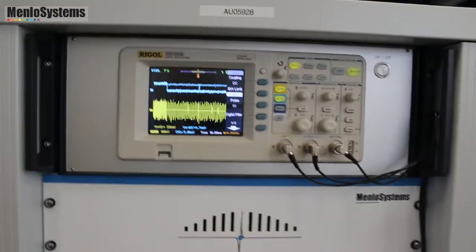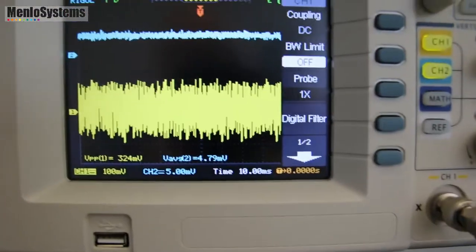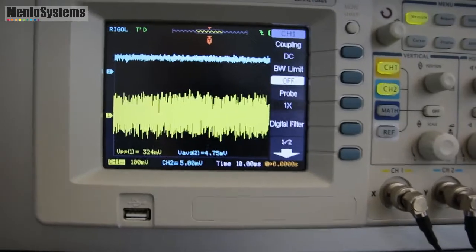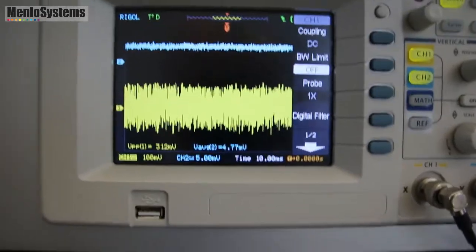So now you can see the system is locked. I can also take it out of lock again. You see the error signal. And I can lock it again. And what you see is that the transmission increases because now you have light in the cavity.